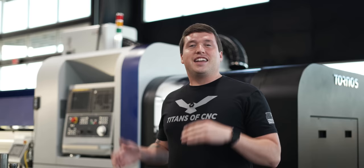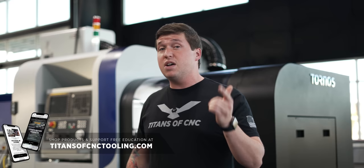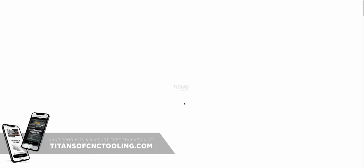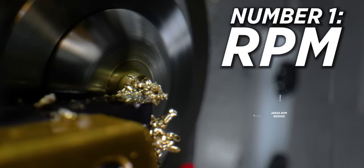Got to interrupt the video real quick. Right now we have some insane deals that you are not going to want to miss on our Kenna Metal Mill 411 and our Mill 412 KT. Up to 60% off right now on our website titansocnctooling.com. Go check it out we're practically giving them away. All right back to the video.